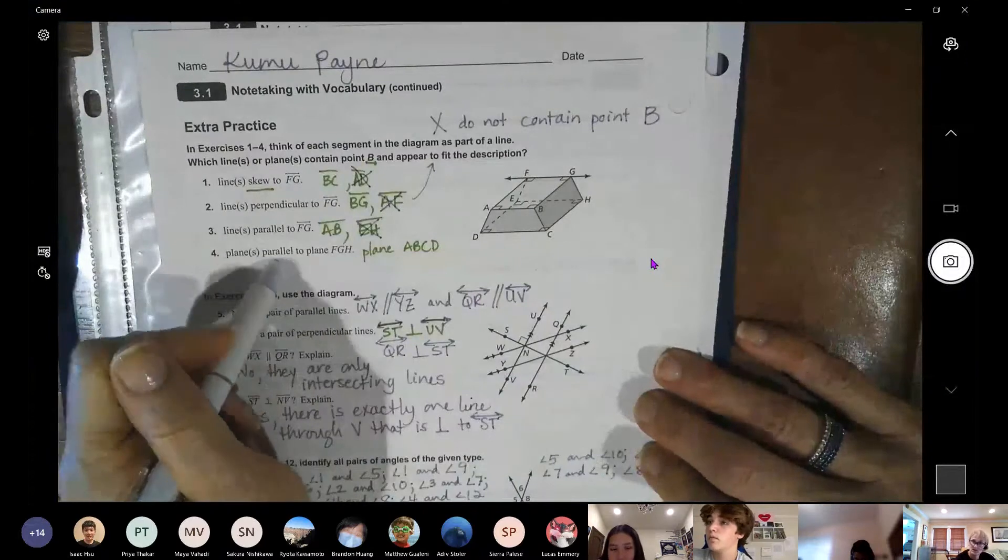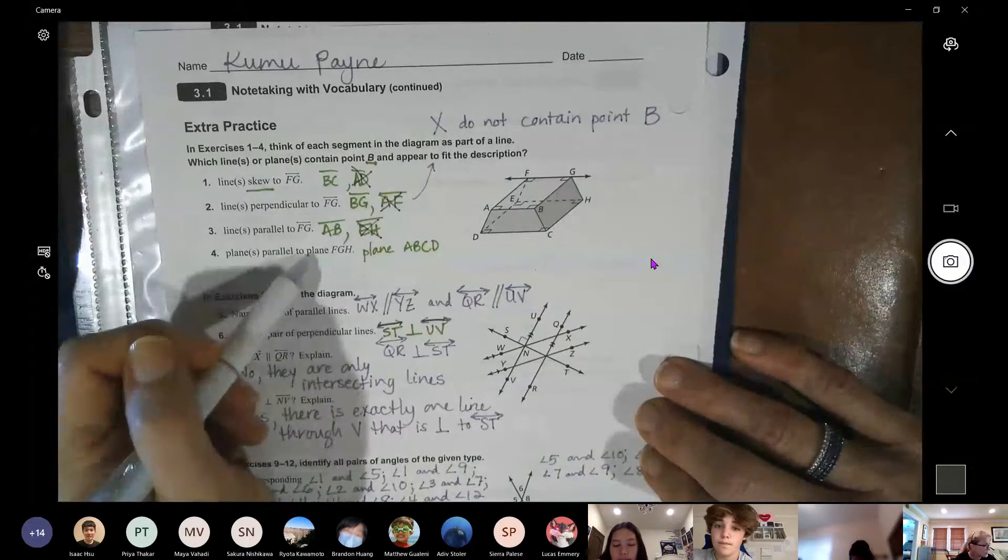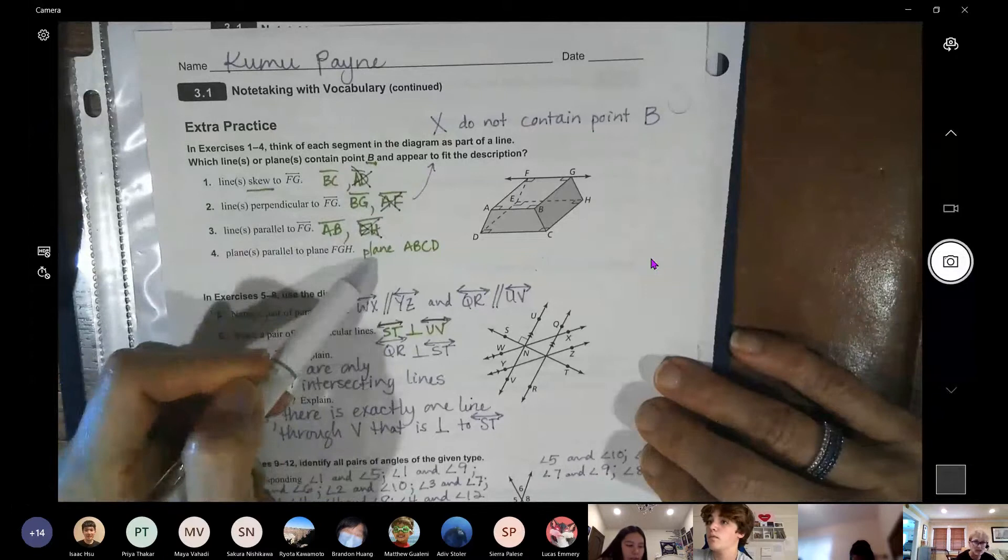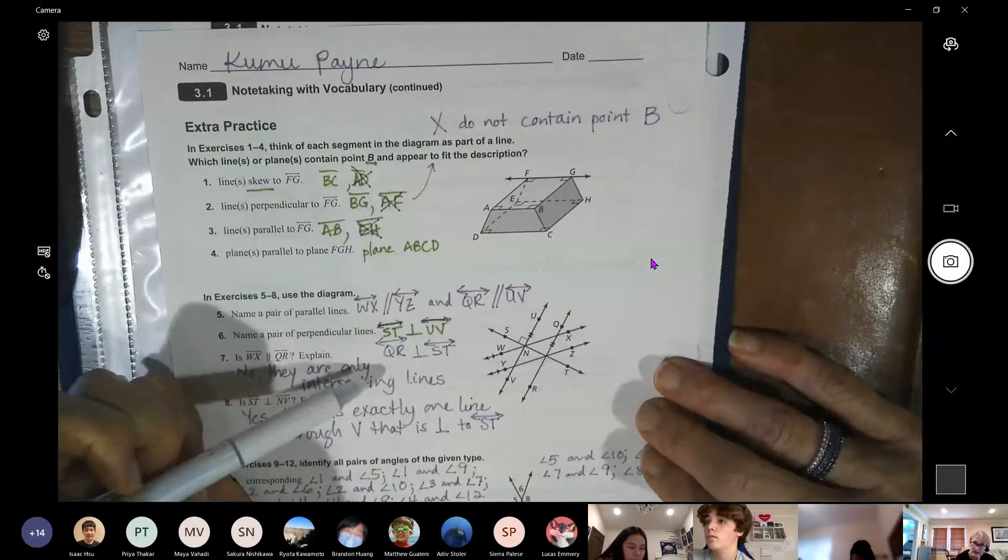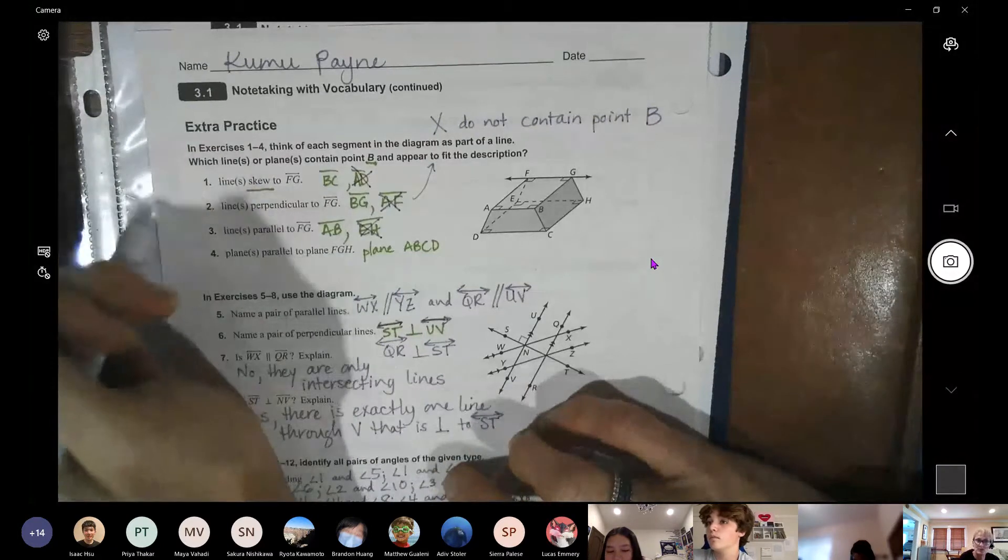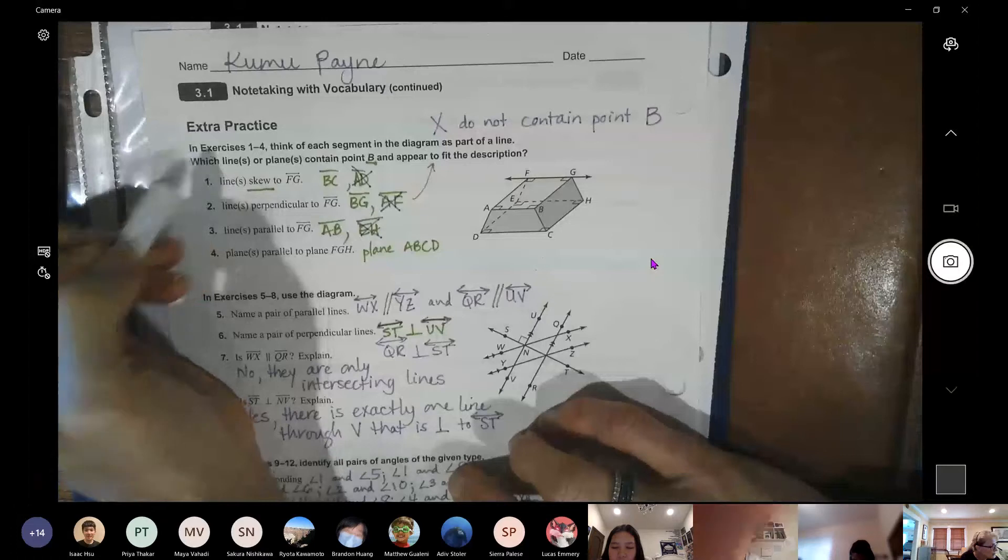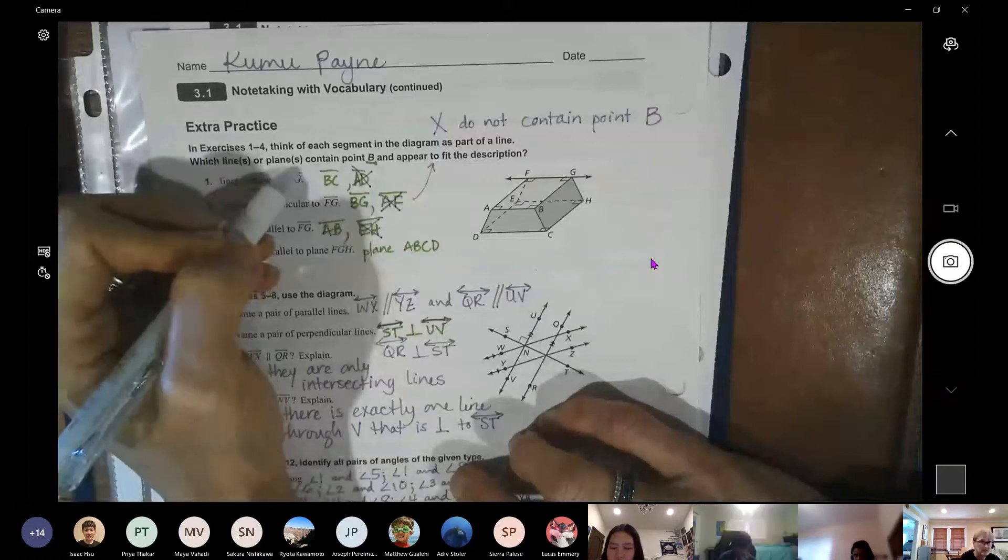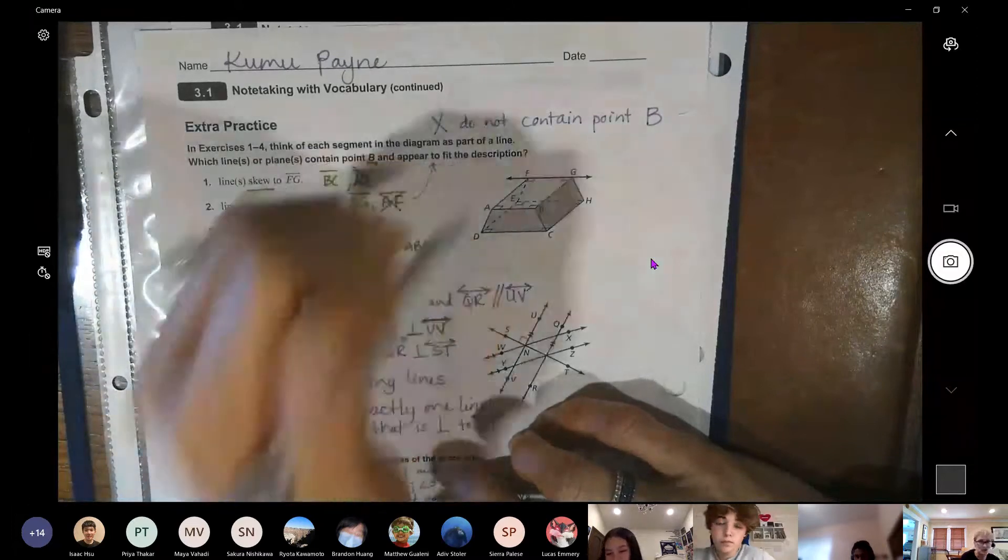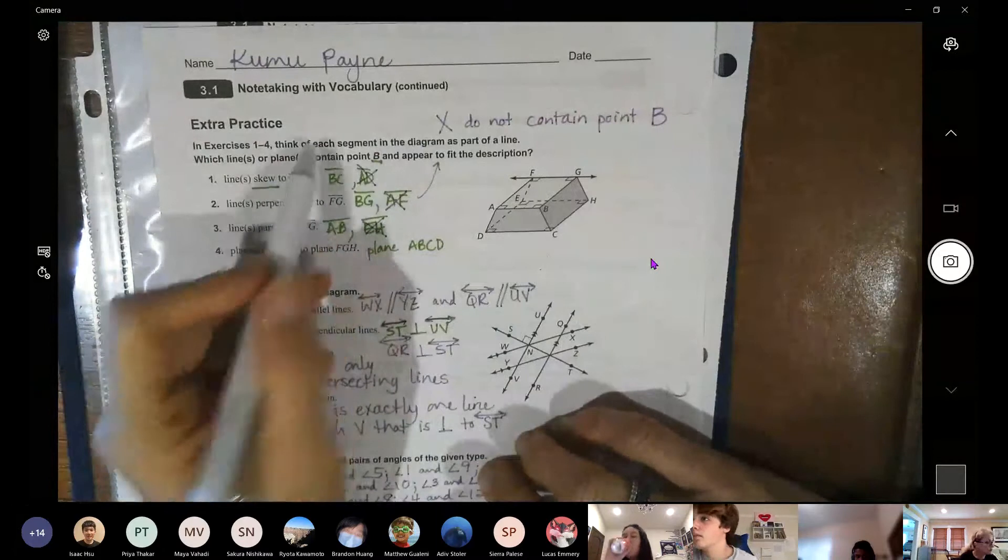I went and looked at the answer key because I wanted to make sure I didn't miss one. And that's when I noticed, oh no, why do I have two answers on each of these? Because I didn't read the directions carefully. So I jumped into it but I didn't actually read what it was asking. Which line or plane contain point B, AD, and fit the description. I just wrote fit the description. I didn't write the ones with B in them.